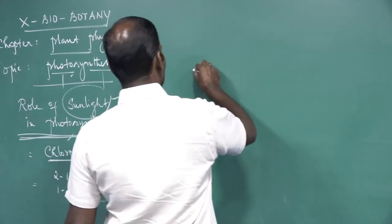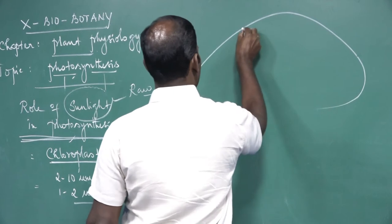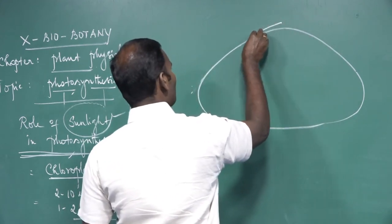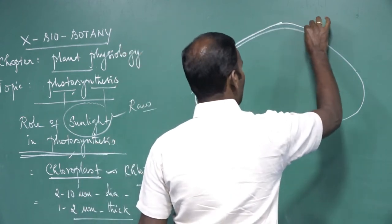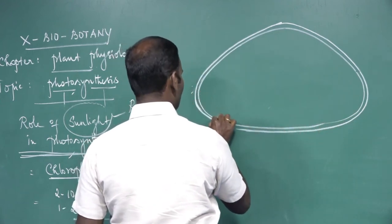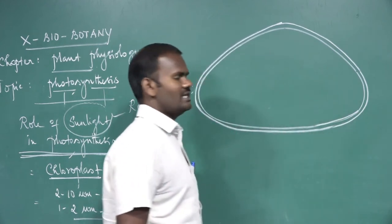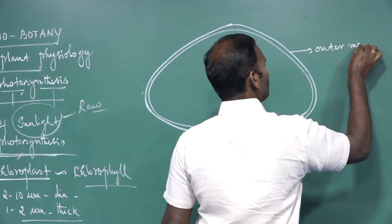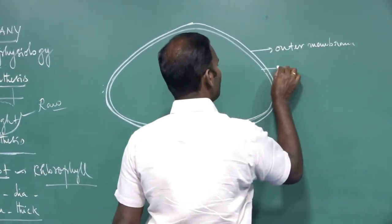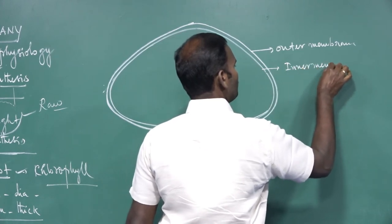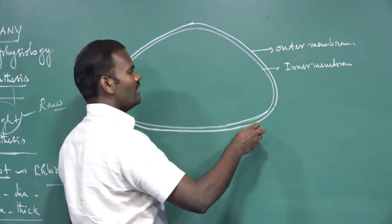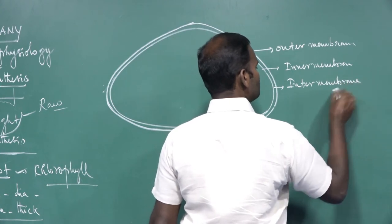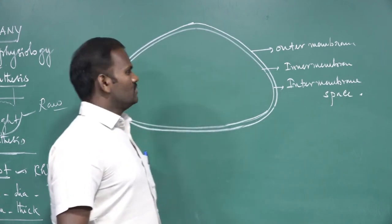The chloroplast is a disc or discoid shape-like structure, also oval-shaped. It is enveloped by two membranes: one is the outer membrane and the other is the inner membrane. The space present between the outer and inner membrane is called the intermembrane space.